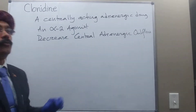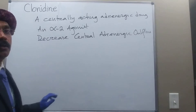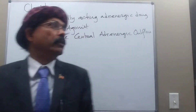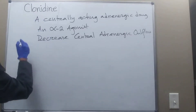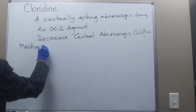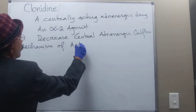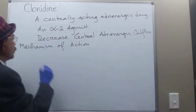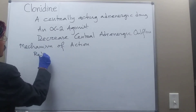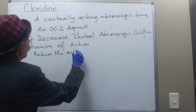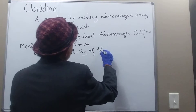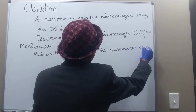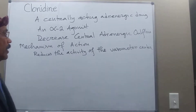This drug is an agonist and it works in the brainstem. Regarding the mechanism of action: it reduces the activity of the vasomotor center in the brainstem.